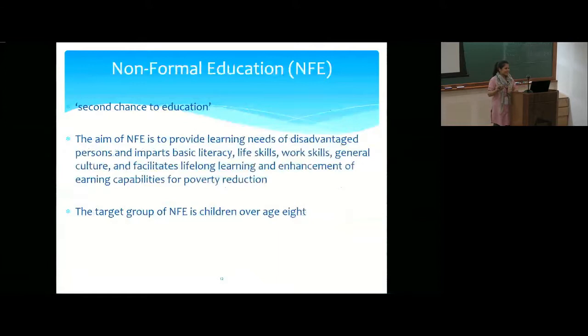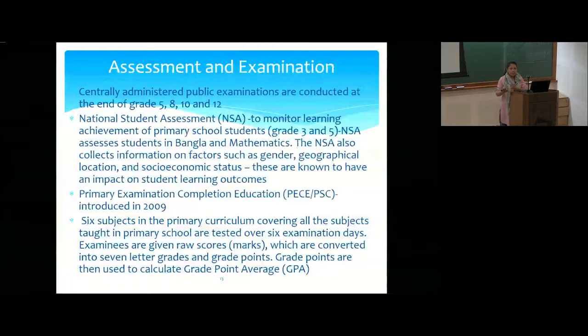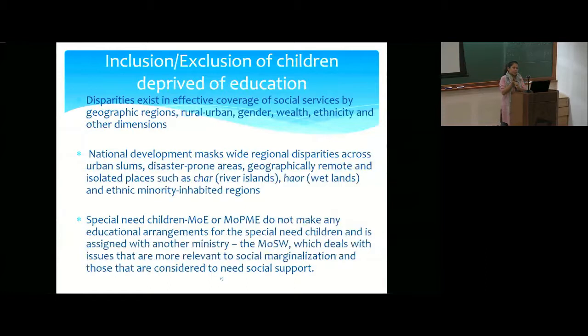Non-formal education provides a second chance for children who have not been able to continue their education. The assessment system features board examinations after grades five, eight, ten, and eleven, with national student assessments in Maths and Bengali also conducted at grade three. Regarding inclusion and exclusion, disparities exist in social service coverage across geographic regions, rural versus urban settings, gender, wealth, ethnicity, and other dimensions.